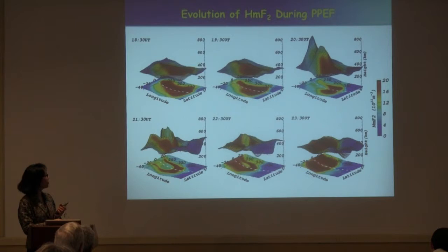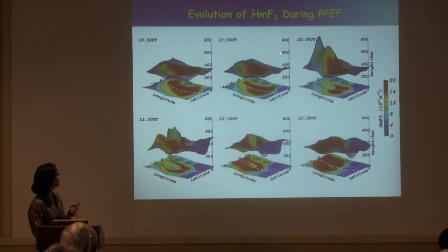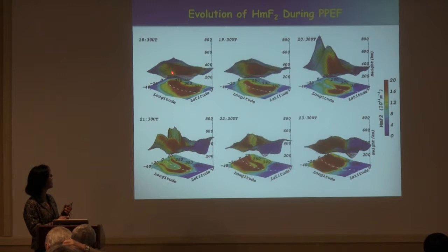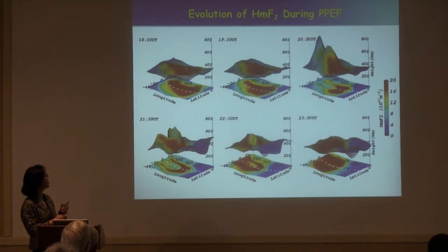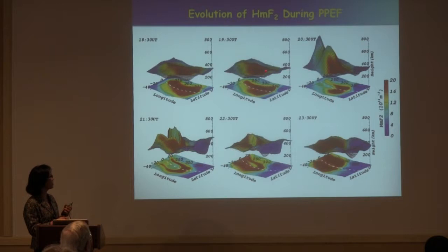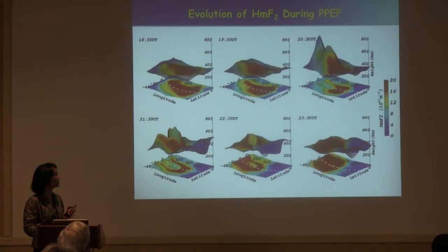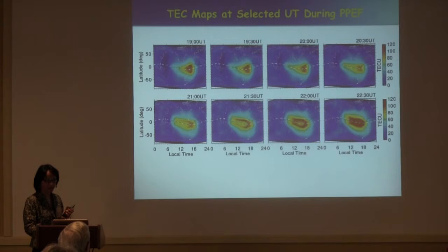These effects are basically due to prompt penetration electric fields. Here's the altitude of the HmF2 peak ionosphere layer, which normally resides between 300 to 400 kilometers, averaging about 350 kilometers. The mesh surface indicates HmF2 height and the color corresponds to NmF2 peak electron density. As the penetration electric field takes place, you can see rapid rising of the ionosphere layers, and then after northward IMF turning, a rapid drop in height — illustrating how dynamic things can be during this four-hour period with dramatic changes happening in the ionosphere.